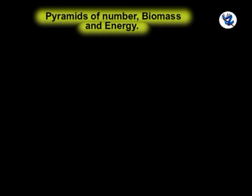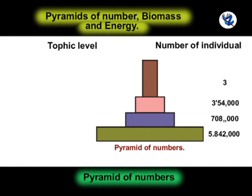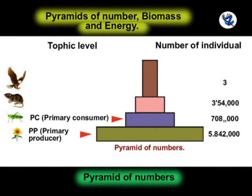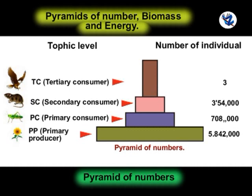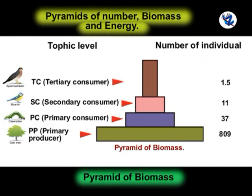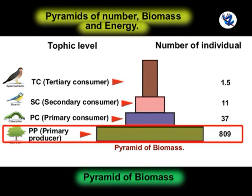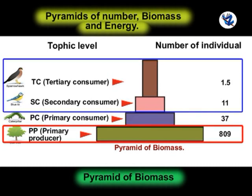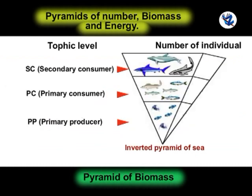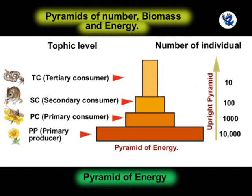The pyramid of numbers shows the relationships between producers, herbivores, and carnivores at successive trophic levels in terms of their numbers. The number goes on reducing from base to apex, so the pyramid is upright. The pyramid of biomass is also upright in most ecosystems, as producers are always more in biomass than herbivores and carnivores. However, the pyramid of biomass in the sea is always inverted because the biomass of fishes is more than that of phytoplankton. The pyramid of energy is always upright.